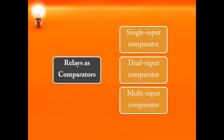The last classification is relays used as comparators. They should be able to carry out addition, subtraction, multiplication, and division of input quantities. Based on this, they are categorized as single input, dual input, and multi input comparators. A single input comparator has only one input signal — for example, if current is the input, it monitors the current against the set value of the current. A dual input comparator has two input signals and measures one quantity against another.